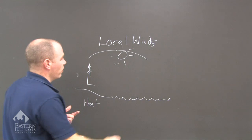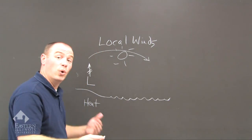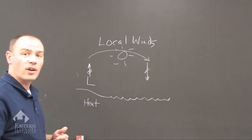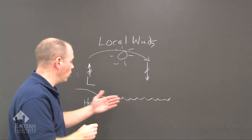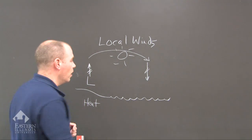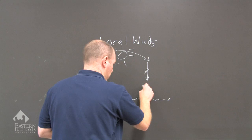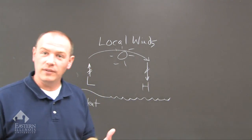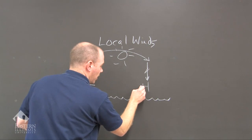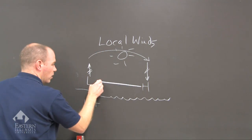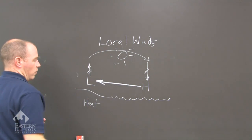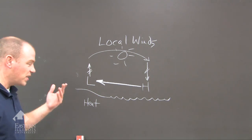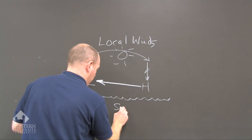It starts to sink because now it's cooler over the water — so now we have sinking air. Over the water, because the water is cooler than the beach, we put a high pressure. As we've identified in previous lectures, air moves from high to low. In this case, the local winds are sea breezes.